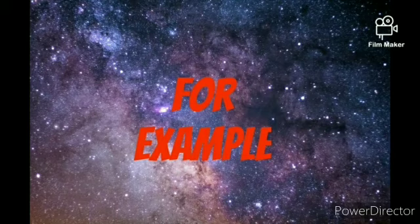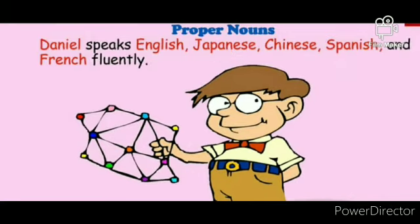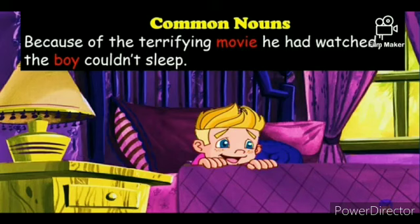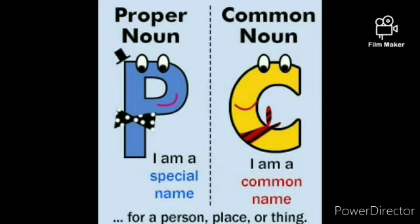For example, common noun: 'The scholar speaks several languages fluently' — in this, scholar and language are both common nouns. Proper noun: 'Danny speaks English, Japanese, Chinese, Spanish and French fluently' — in this, Danny, English, Japanese, Chinese, Spanish and French are all proper nouns, and they start with a capital letter. 'Because of the terrifying movie, the boy could not sleep' — in this, movie and boy are both common nouns. 'On New Year Day, I always go to Helsing Beach' — in this, New Year Day and Helsing Beach are both proper nouns.